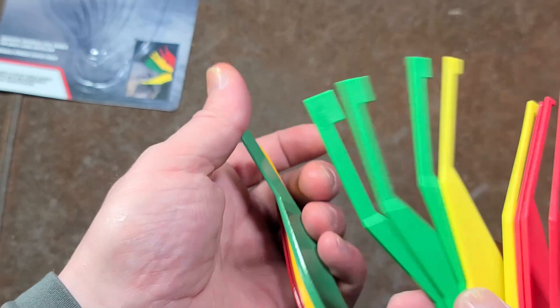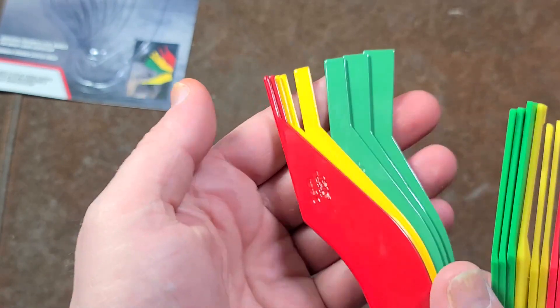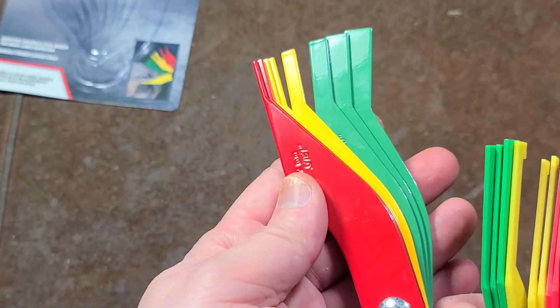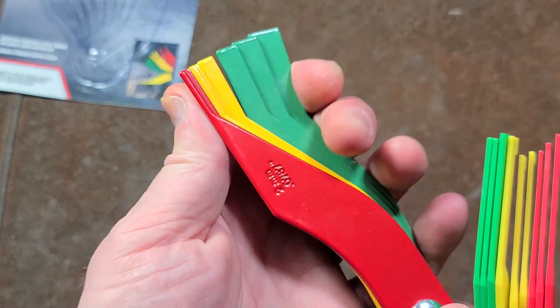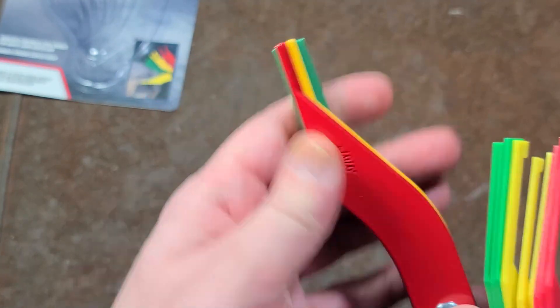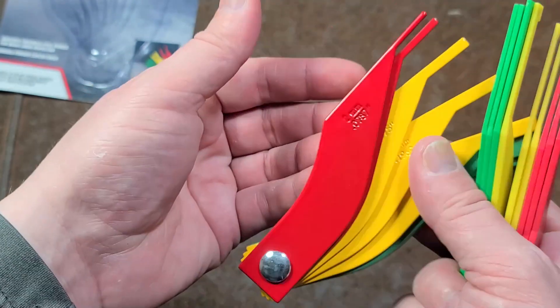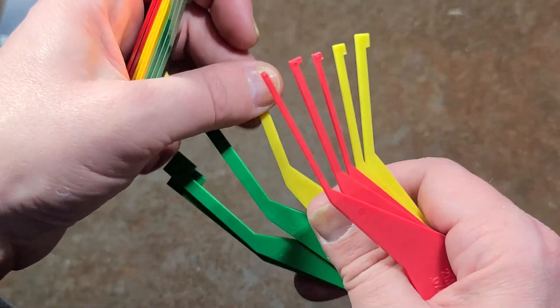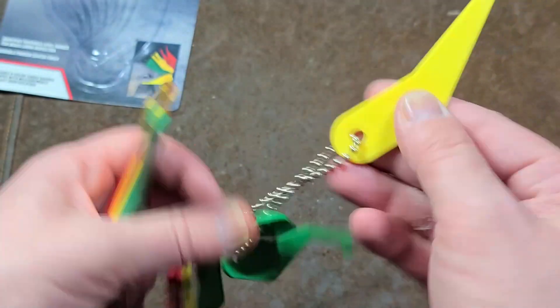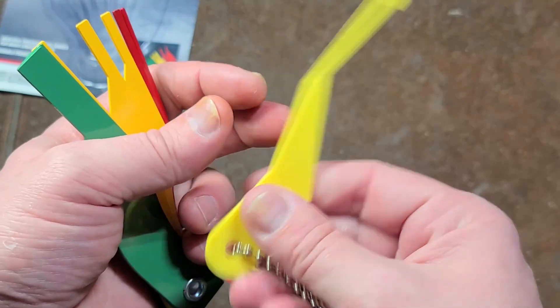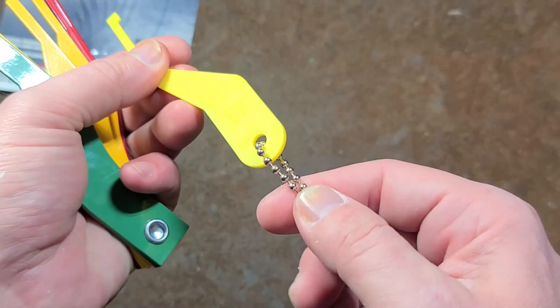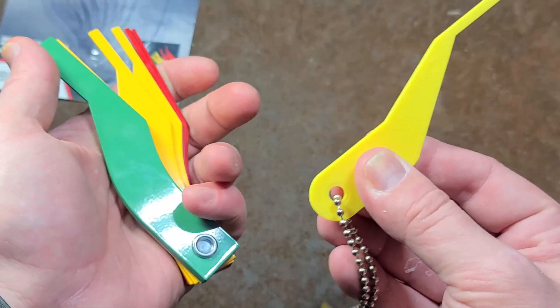So these are going to be a whole heck of a lot more useful than this style, which can only be used with real specific alloy wheels that have enough space. Since they're all attached, you grab the size that you need and all the rest of them just dangle away. You can get this in however you want. You can even detach it from the chain, just use it one gauge at a time.